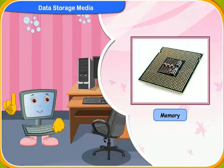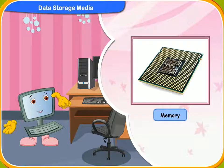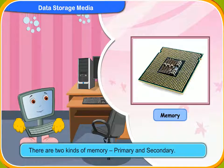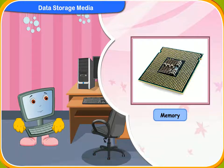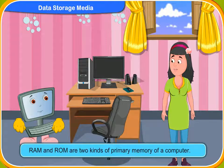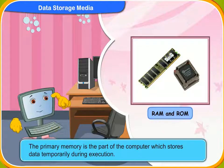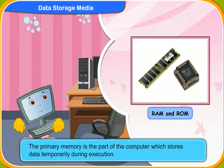Let us now look at the memory of a computer. As you already know, the computer stores all the work done on it. All the information stored in the computer memory is made up of chips. There are two kinds of memory: primary and secondary. RAM and ROM are two kinds of primary memory of a computer. The primary memory is the part of the computer which stores data temporarily during execution. The computer's primary memory tells us about the amount of data that a computer can store in it.